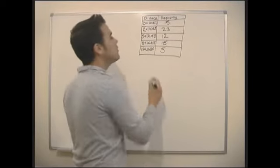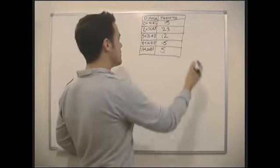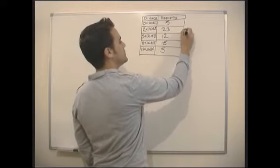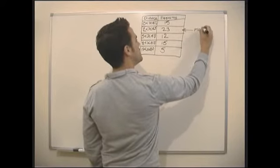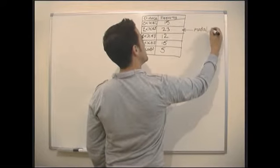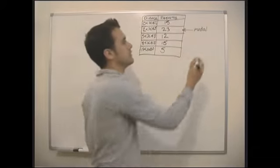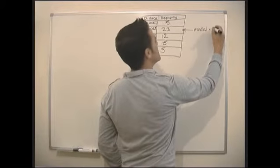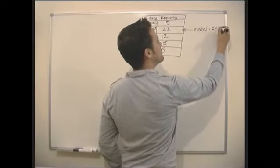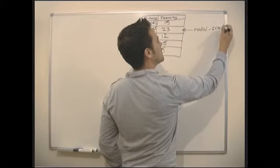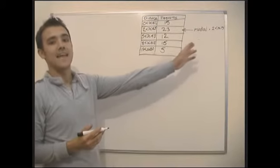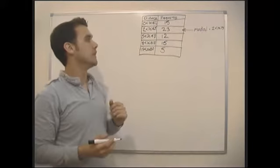So the modal value, the modal range, the modal distance, is just this one, the one with the most in it. So the modal value is just between 2 and 5. So equals less than, greater than 2, less than 5. We can't say any more specifically than that, because that's all we know.